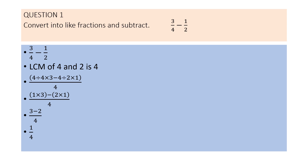Now we apply the formula: LCM divided by denominator, into numerator, upon LCM. So: 4 divided by 4 into 3, minus 4 divided by 2 into 1, upon 4. That gives us 1 into 3 minus 2 into 1 upon 4, which is 3 minus 2 upon 4, giving us 1 by 4 as the answer.